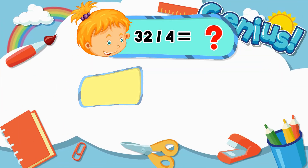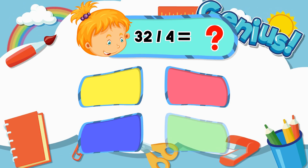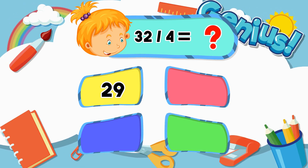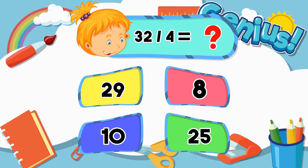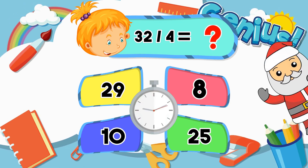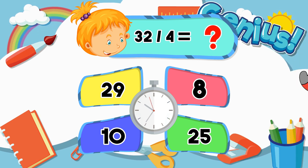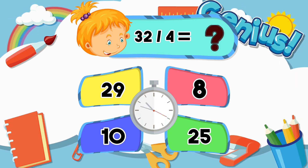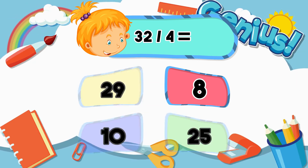What is 32 divided by 4? 29, 8, 10, 25. The answer is 8.